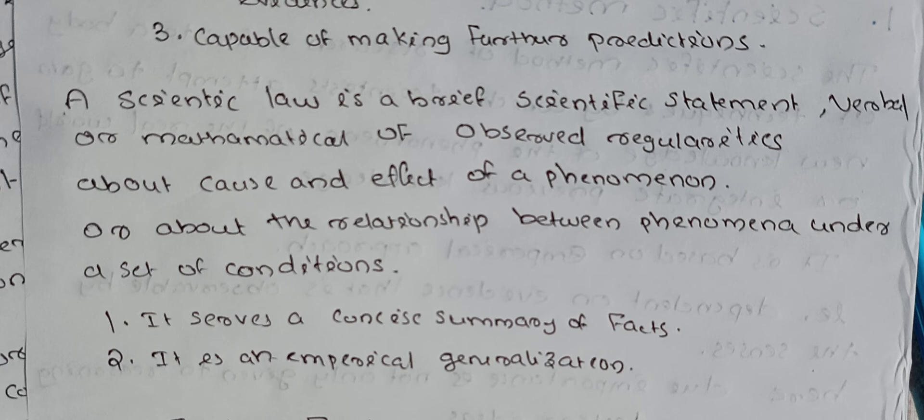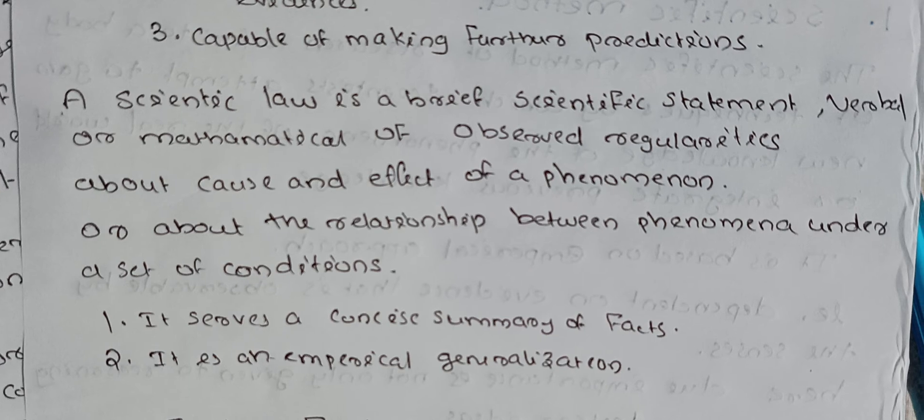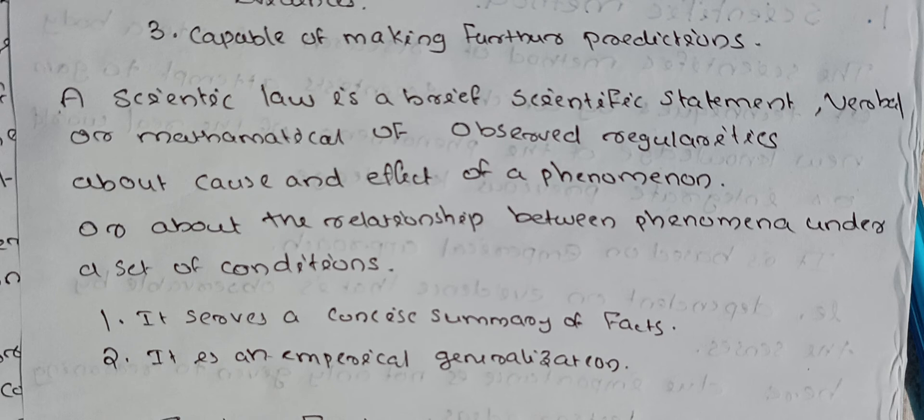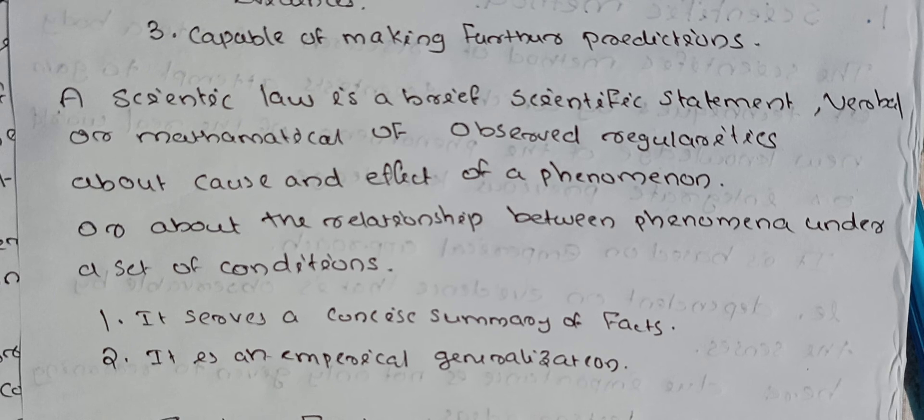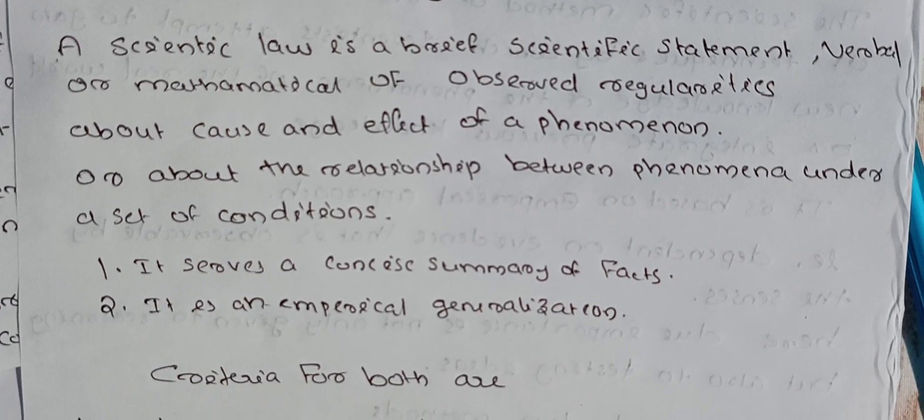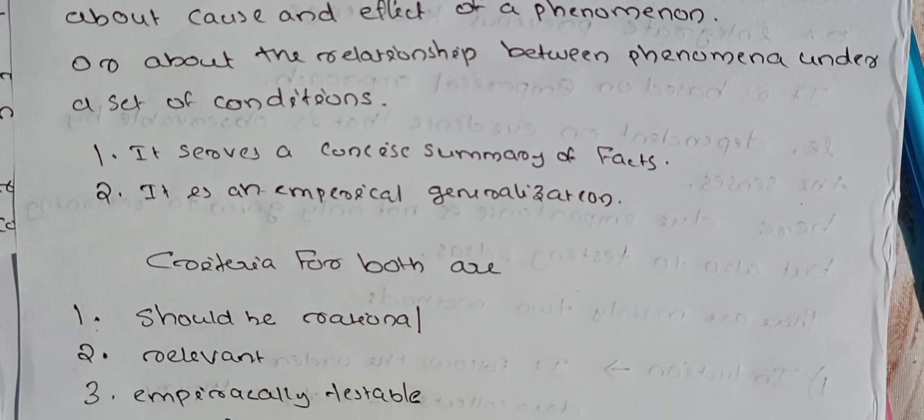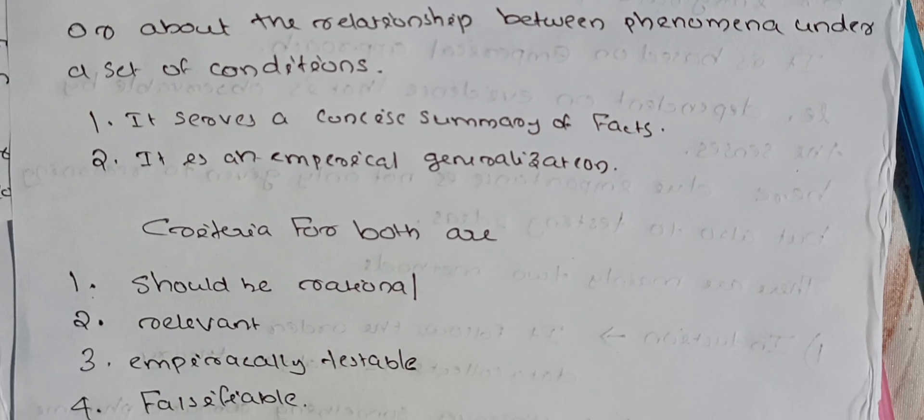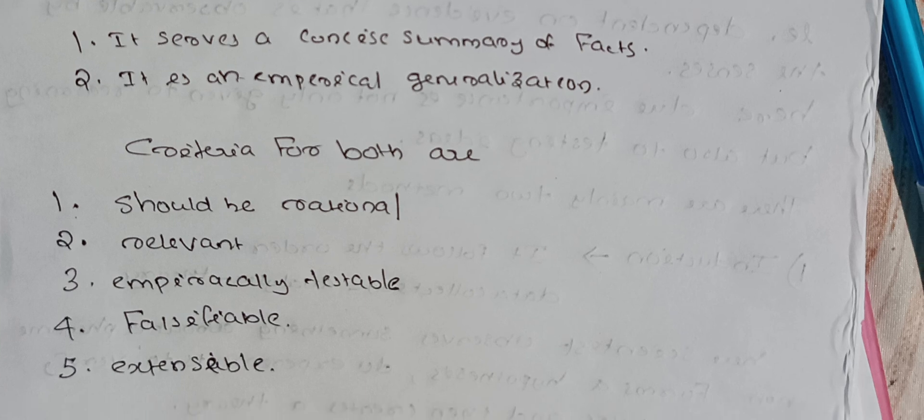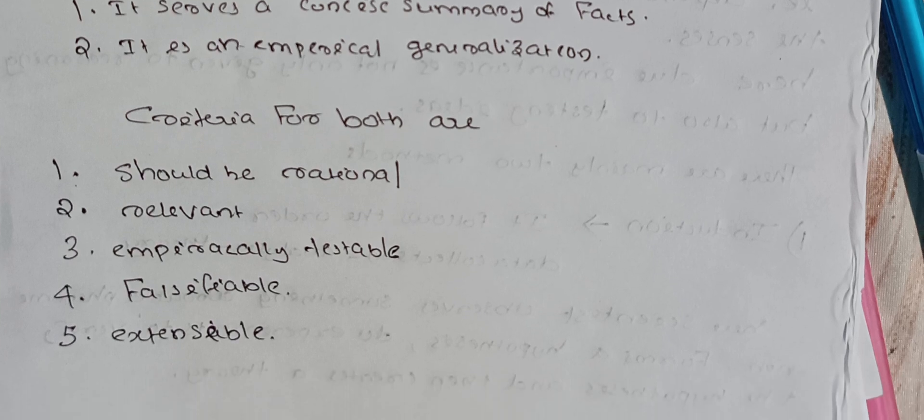In this case, there is an elaborated version of scientific theory. The criteria for both are: should be causal, relevant, empirically testable, falsifiable, and extensible.